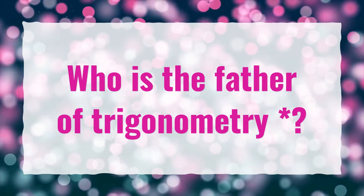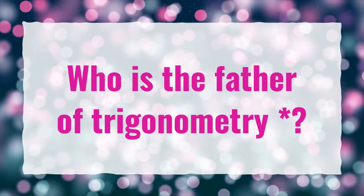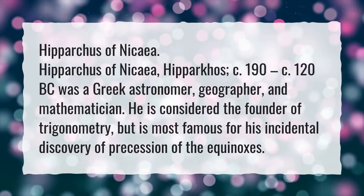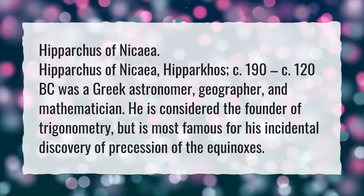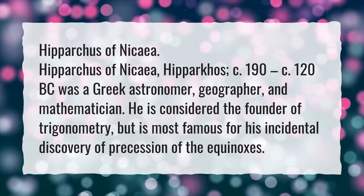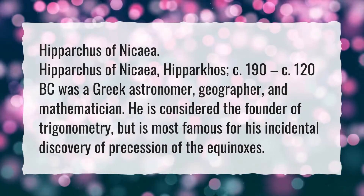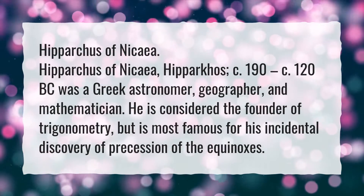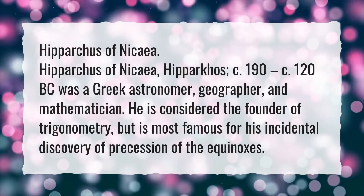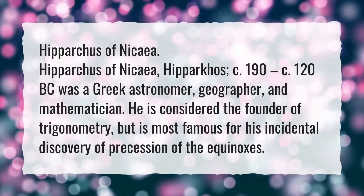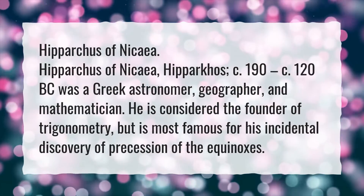Who is the father of trigonometry? Hipparchus of Nicaea, also known as Hipparchos, circa 190–120 BC, was a Greek astronomer, geographer, and mathematician. He is considered the founder of trigonometry, but is most famous for his incidental discovery of the precession of the equinoxes.